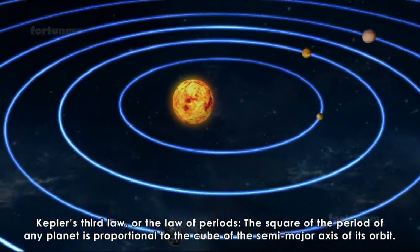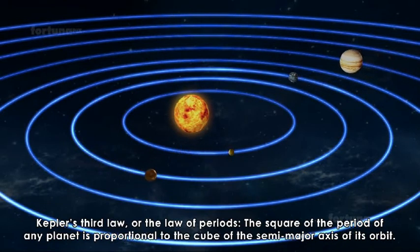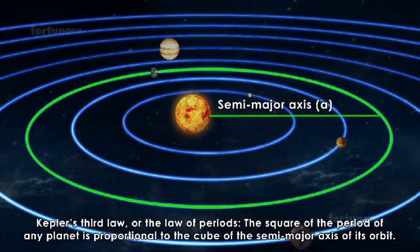Kepler's third law or the law of periods states that the square of the period of any planet is proportional to the cube of the semi-major axis of its orbit.